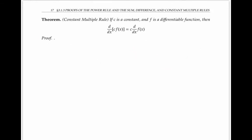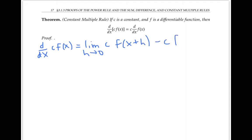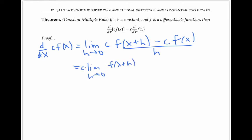Next, I'll prove the constant multiple rule, which says that if c is a real number constant and f is a differentiable function, then the derivative of c·f is just c times the derivative of f. Starting with the limit definition, the derivative of c·f(x) is the limit as h goes to zero of c·f(x+h) minus c·f(x), over h. Factoring out c, and pulling it out of the limit since it has nothing to do with h, gives c times the limit as h goes to zero of f(x+h) minus f(x) over h, which is just c times the derivative of f.